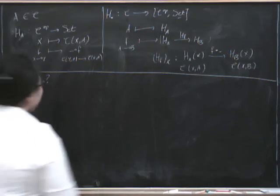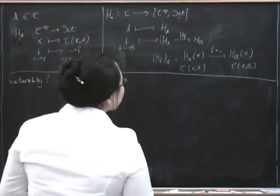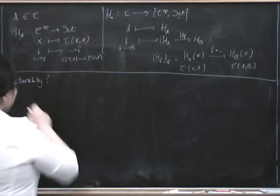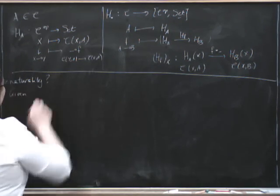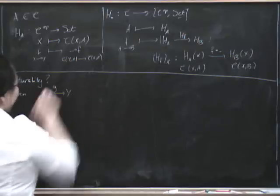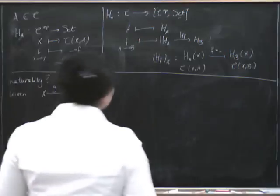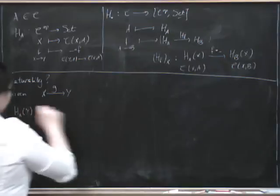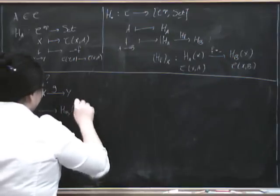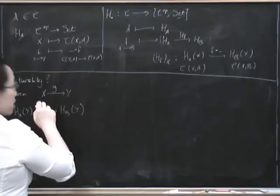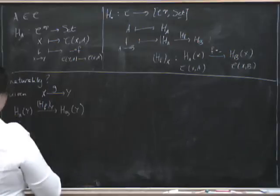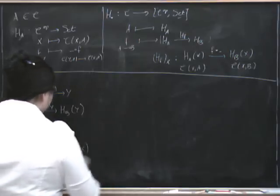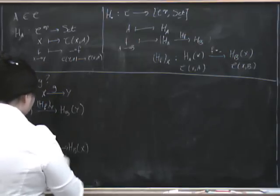So this has to be a natural transformation in here, so we've got to be careful about our ops again. Let's just draw out a generic naturality square for this. It would say, given any morphism, let's call it G from X to Y, we've got to have a naturality square that looks like this. So we're going to have to have H_A of Y going to H_B of Y at the top via the component H_F at Y. Then down here, we've got to have H_A of X going to H_B of X via the component H of F at X.